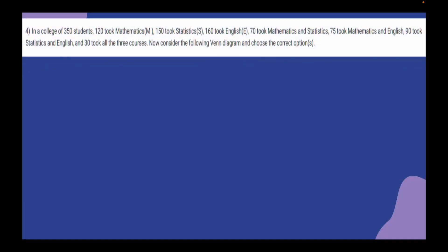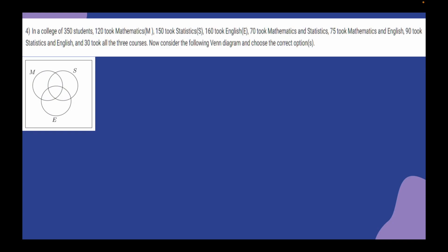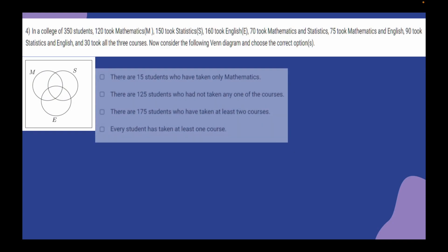The question is: in a college of 350 students, 120 took Mathematics, 150 took Statistics, and 160 took English. Then 70 took Mathematics and Statistics, 70 took Mathematics and English, 90 took Statistics and English, and 30 took all 3 courses. We have to consider the following Venn diagram and choose the correct options.